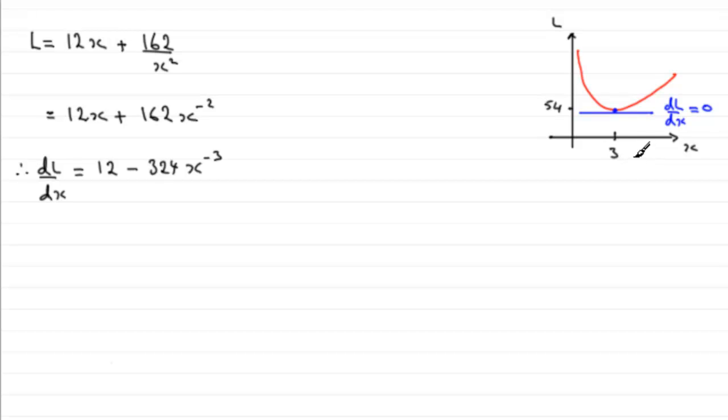We've just got to prove that this point here is a minimum by differentiation, and there's essentially two ways that we can do this. We could draw up a table looking at the gradient, or we could use the second differential. I'll show you both methods in this video clip, but we'll start then with the second differential method.